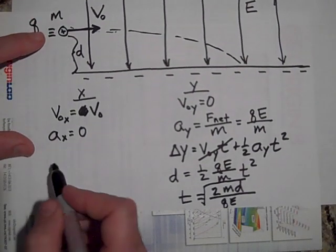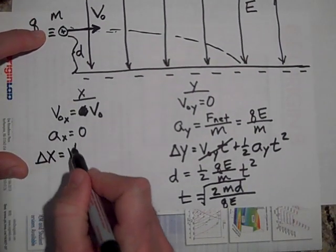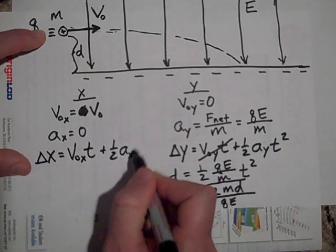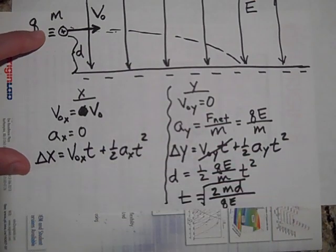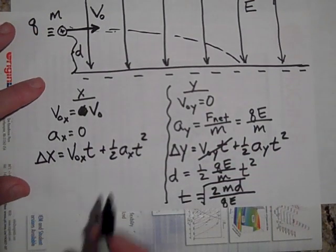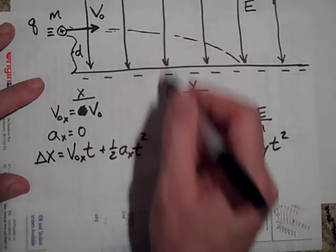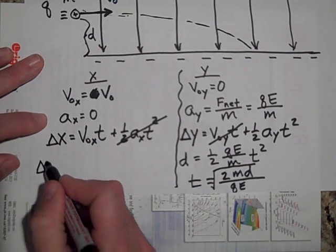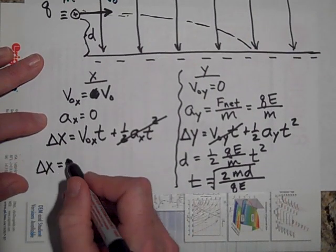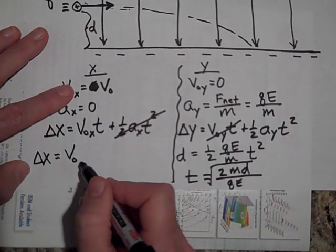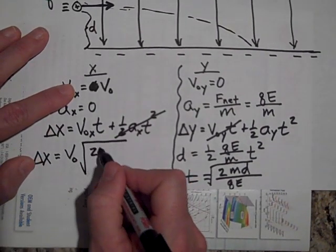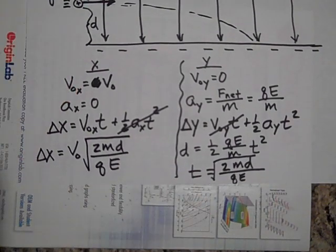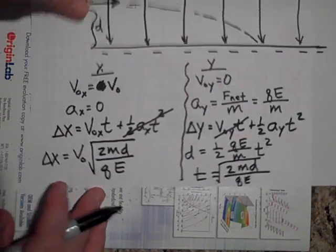Okay, so now come on over here, and delta X equals V naught in the X direction times T plus one half A in the X direction T squared. It's a good review for projectile motion. Now there is no acceleration in the X direction, it's just in the Y. So get rid of that term. And so delta X is going to just be V naught times T. So that's what delta X is.